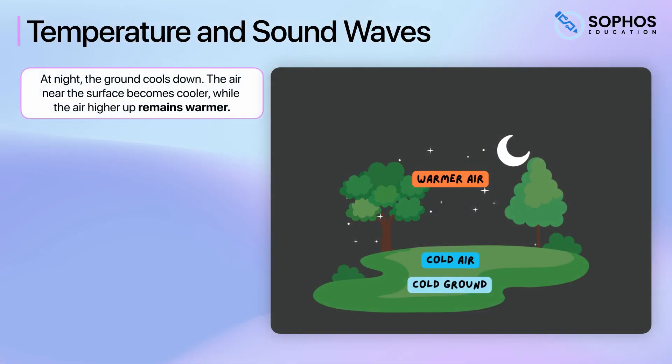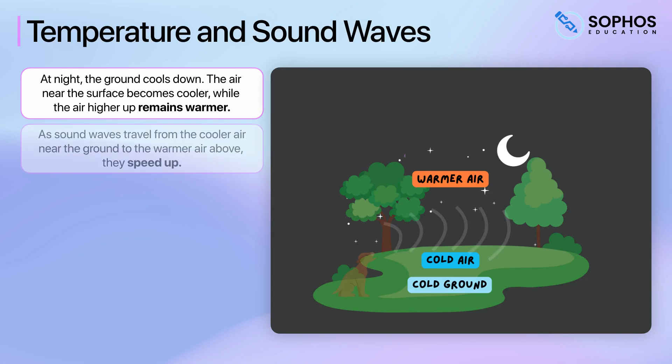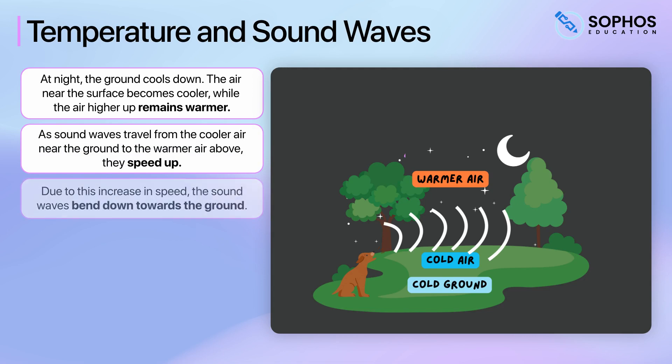At night, the ground cools down. The air near the surface becomes cooler, while the air higher up remains relatively warmer. This sets up the opposite temperature gradient to what occurs during the day. As sound waves travel from the cooler air near the ground to the warmer air above, they speed up. Due to this increase in speed, the sound waves bend downwards towards the ground.